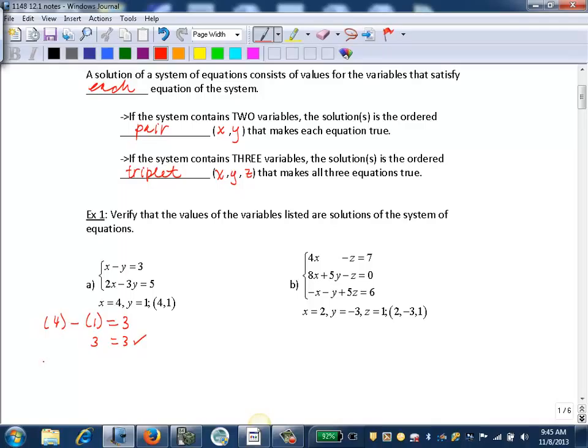And then we'll check it in our second equation. 2 times x, so 2 times 4, minus 3 times y. We'll put the 1 in for the y. That equals 5, so we get 2 times 4 is 8, minus 3 times 1 is 3, so 8 minus 3 is 5. So that works. Since it satisfies both of these equations, this ordered pair is a solution to this system.